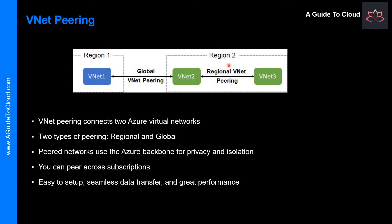Once peered, the Virtual Networks appear as one for connectivity purposes. There are two types of VNet Peering: Regional VNet Peering, which connects Azure Virtual Networks in the same region, and Global VNet Peering, which connects Azure Virtual Networks in different regions. When creating a Global Peering, the peered Virtual Network can exist in any Azure Public Cloud region or China Cloud regions, but not in Government Cloud regions — you can only peer Virtual Networks in the same region within Azure Government Cloud.